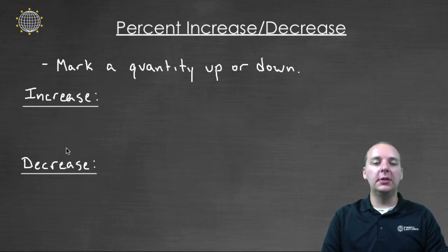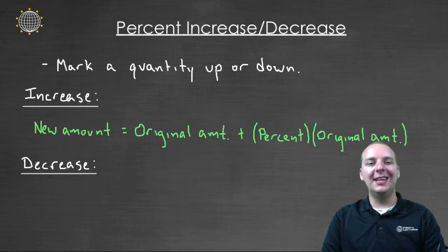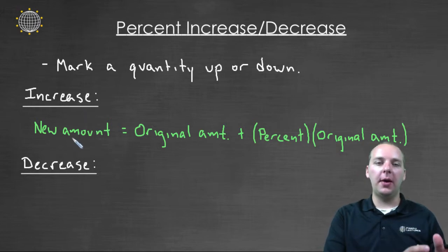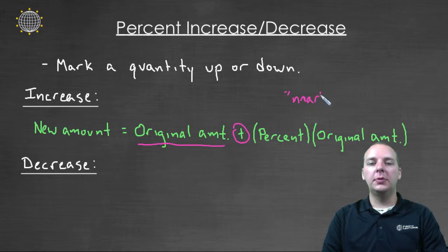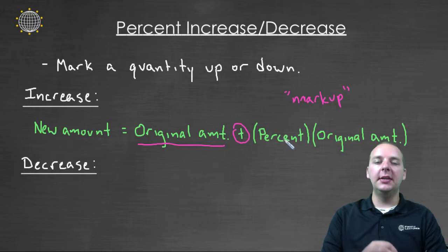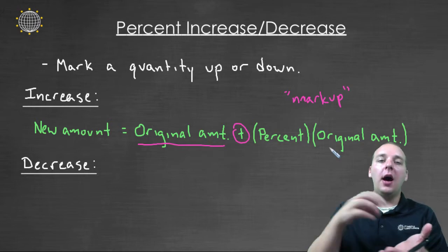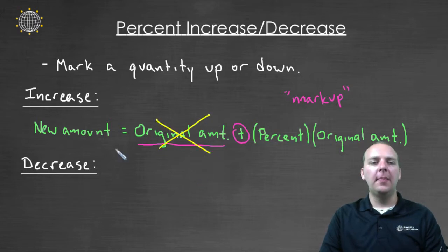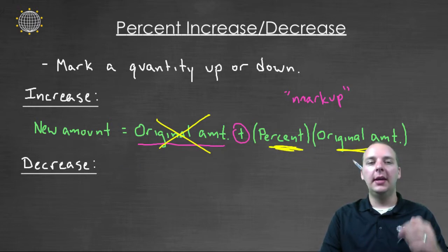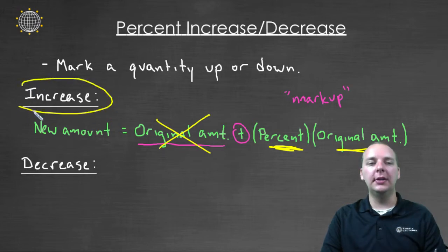Let's look at these two formulas — you'll notice they're pretty similar: marking something up versus marking something down. To do a percent increase, our new amount is going to be our original amount plus what we'll call the markup. This part is the markup — it's a percentage of the original amount, and it's going to be added back on top of the original amount. A lot of students forget this first part. If you just take a percentage of the original amount, the new amount will be smaller — it won't be an increase.